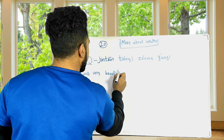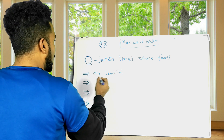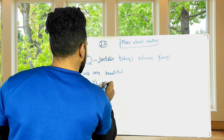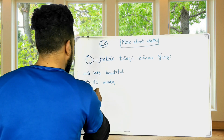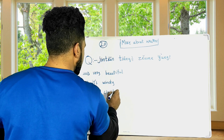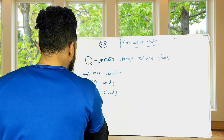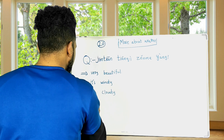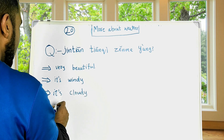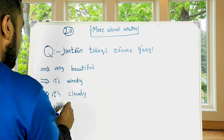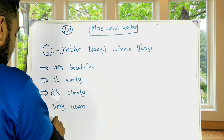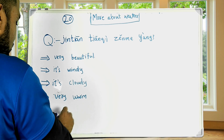Here are the five new short-form answers to the question 'How's the weather today?': very beautiful, it's windy, it's cloudy, very warm, and very terrible.